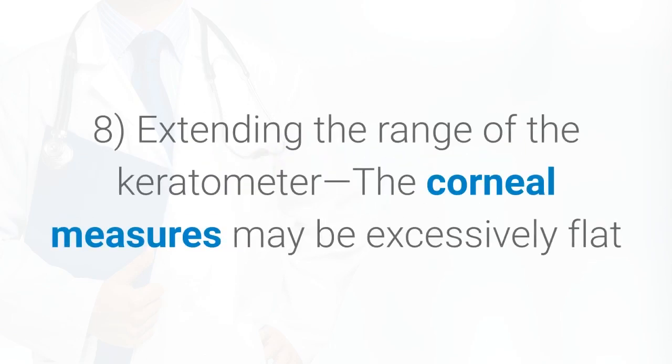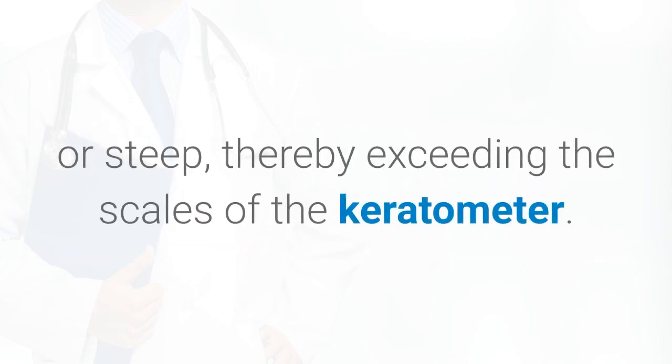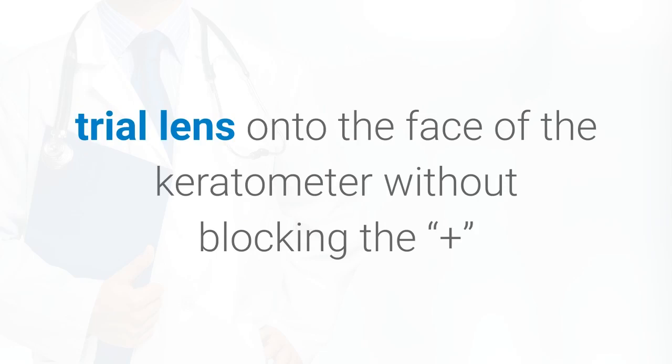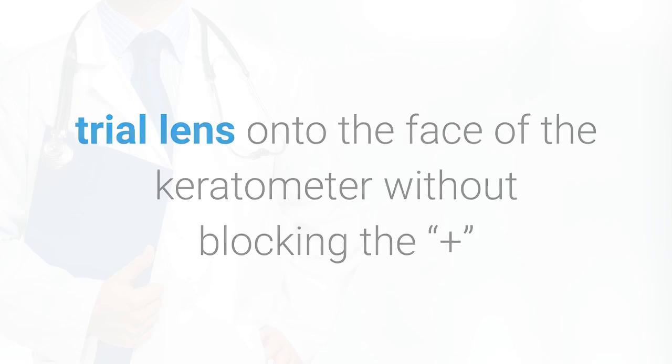8. Extending the range of the keratometer. The corneal measures may be excessively flat or steep, thereby exceeding the scales of the keratometer. If this occurs, tape a plus 1.25 (steeper) or minus 1.00 (flatter) trial lens onto the face of the keratometer without blocking the plus extensions of the mires.